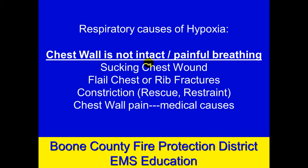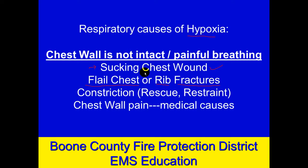More traumatic causes of hypoxia: the chest wall may not be intact. Maybe there's a hole in the chest from a gunshot, knife, or penetrating trauma, and the whole system is not working well because the chest is supposed to be a sealed-up system. An untreated sucking chest wound could cause hypoxia. It could also be a flail chest — a series of rib fractures where two or more consecutive ribs are broken in two or more places. Those rib fractures make it hard and painful to breathe, so a person may not be breathing deeply enough, causing hypoxia.